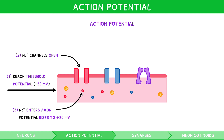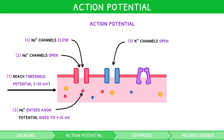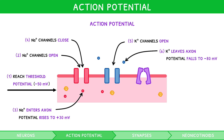Repolarisation immediately follows depolarisation. During this, voltage-gated sodium channels close to prevent sodium entry, whilst voltage-gated potassium channels open, allowing potassium to diffuse out down the charge gradient. This causes the inside of the axon to become more negative again, so the membrane potential falls to minus 80 millivolts. Note how repolarisation does not achieve resting membrane potential exactly, but overshoots it — known as hyperpolarisation.